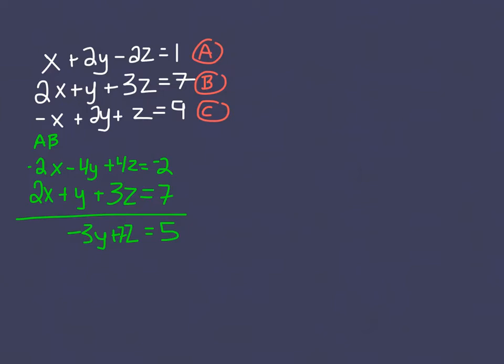Now I'm going to copy over equations A and C. Again, I could have copied B and C, but since there is already an additive inverse, I'm going to copy A and C to speed up my process. When I add these two equations together, I get four Y minus Z equals ten.